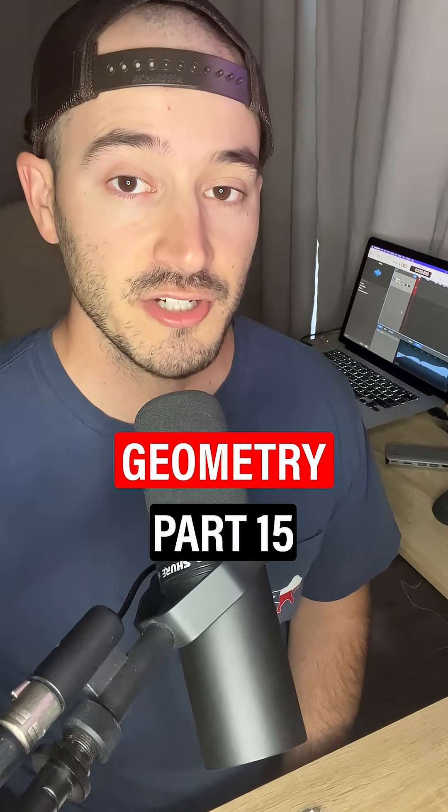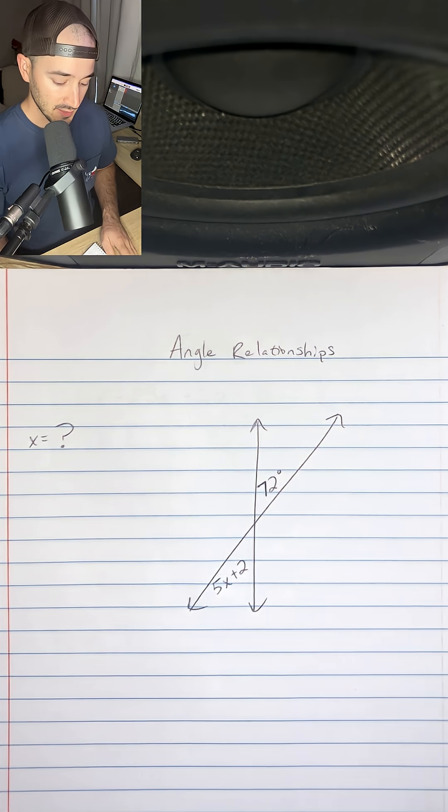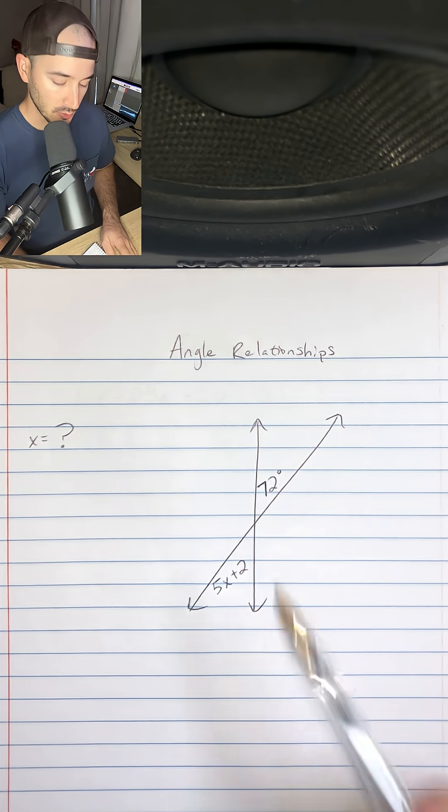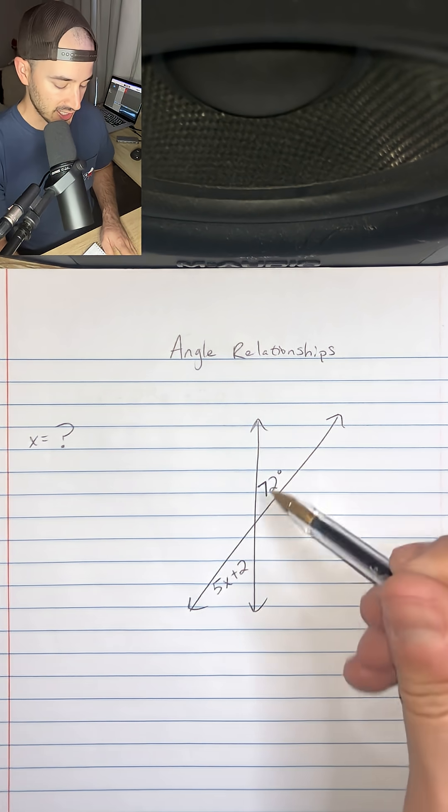This is everything you need to know for geometry part 15. We're talking about angle relationships today, and if we look at this problem we can immediately see that we have two expressions and these two angles.